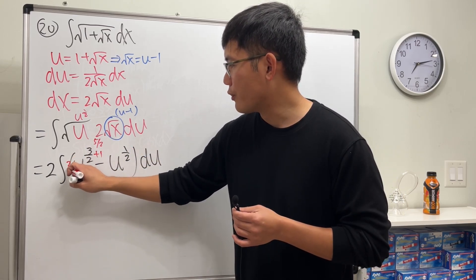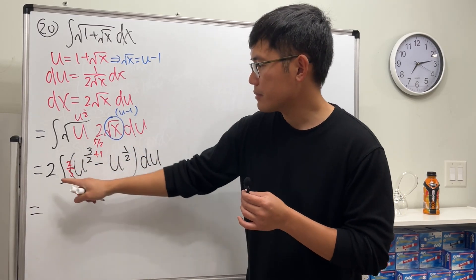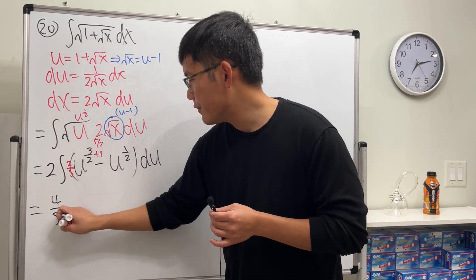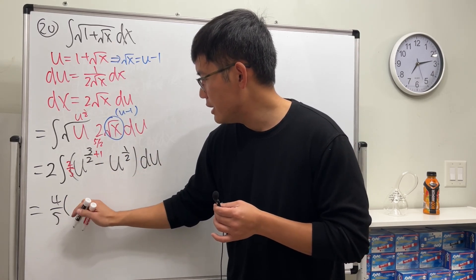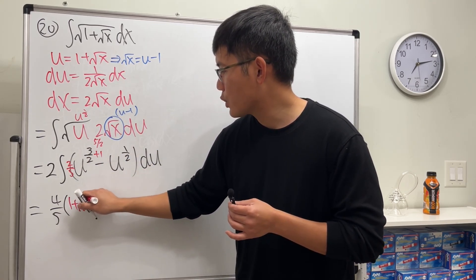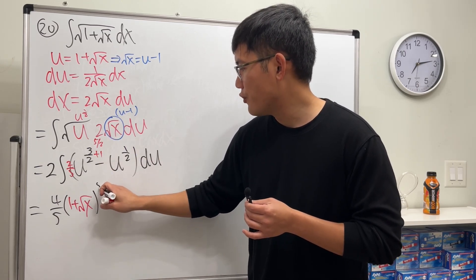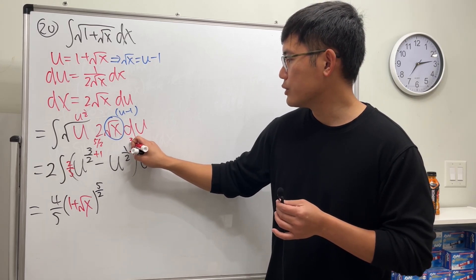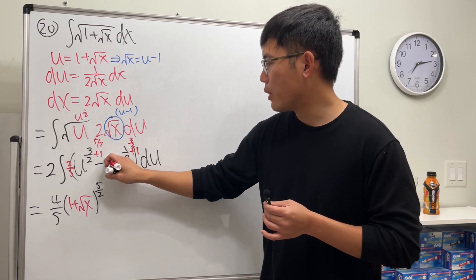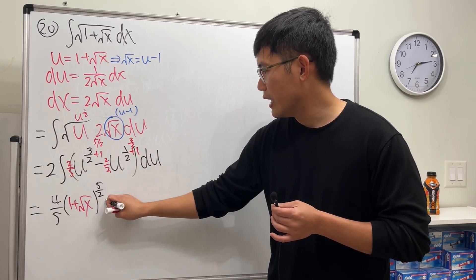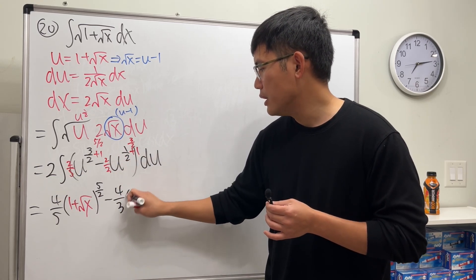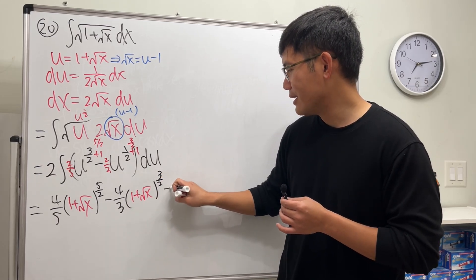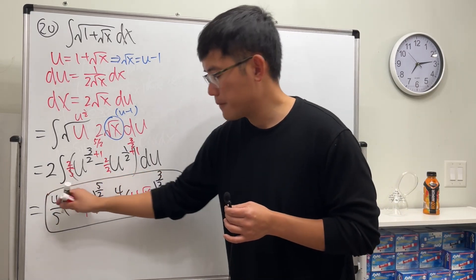Distributing the 2: for the first term, adding 1 to the 3/2 power gives 5/2, so dividing gives 2/5, and 2 times 2/5 is 4/5. So we get 4/5 times (1 plus square root of x) raised to the 5/2. For the next term, adding 1 to 1/2 gives 3/2, dividing gives 2/3, and distributing gives minus 4/3 times (1 plus square root of x) raised to the 3/2. Plus C — done!